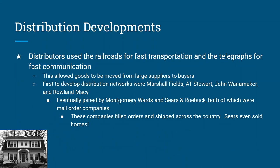One of the big uses for railroads is distribution. Between the railroads and the telegraphs, you can order items for sale that aren't in your city — people in the middle of the country can order stuff from Chicago and New York for the first time. This allows buyers to purchase from large suppliers and have goods moved to them by rail. Some very big distributors at the time went on to become the largest department stores: Marshall Fields, A.T. Stewart, Wanamakers, and Macy's.